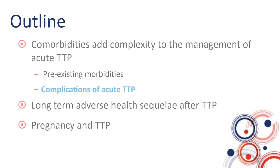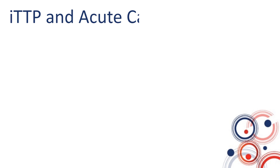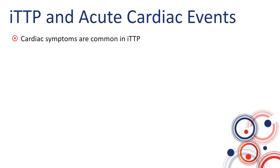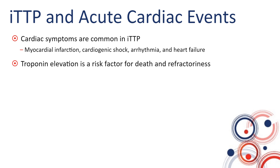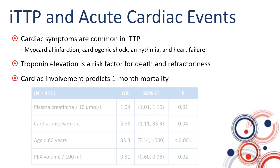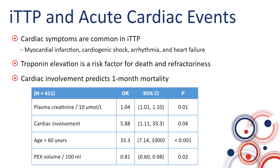The most significant complications during the acute TTP episode are cardiac events. Cardiac symptoms are quite common in patients presenting with immune TTP, including myocardial infarction, cardiogenic shock, arrhythmias, and heart failure due to ischemia. Several studies have shown that troponin elevation as a marker of cardiac dysfunction is a risk factor for death from TTP, as well as for refractory TTP that does not respond well to standard treatment. From the recent French study, cardiac involvement predicts one-month mortality with an odds ratio as high as 5.8, adjusted for other morbidities such as age.